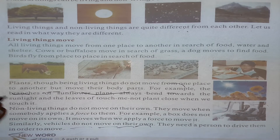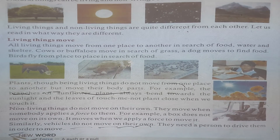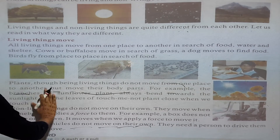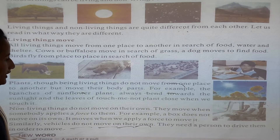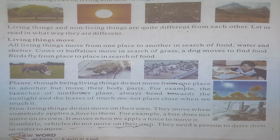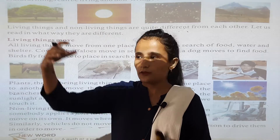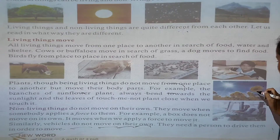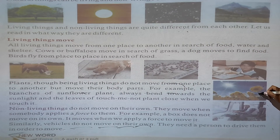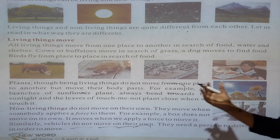But plants move their body parts, like branches. For example, the branches of the sunflower plant always bend down towards the sunlight. When plants get sunlight, their branches bend down. This is the sunflower and these are the branches — when they get sunlight, they bend down.